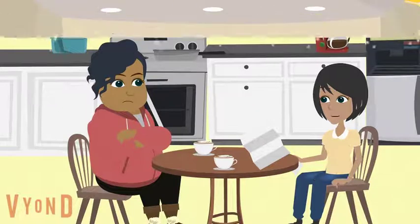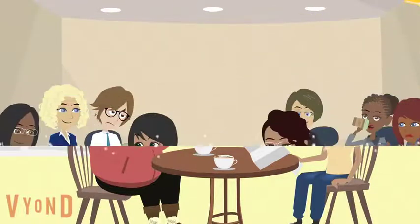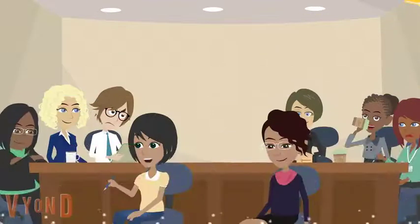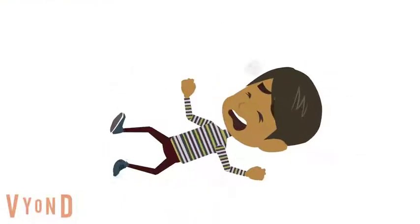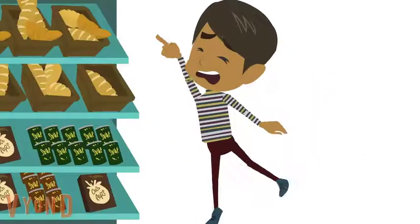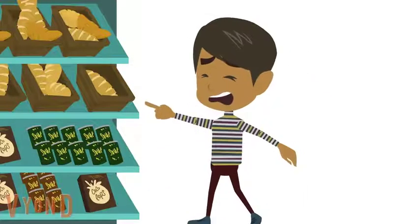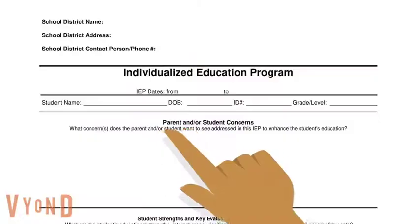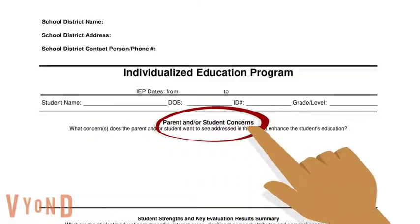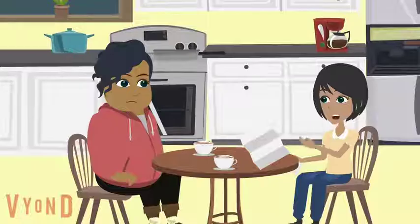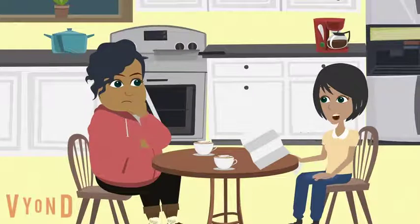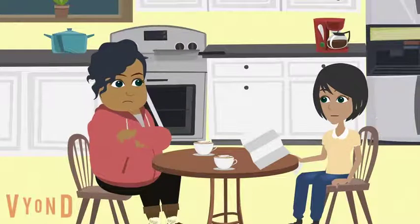Also, at the meeting I talked about how I was worried that Abel has tantrums and he doesn't use words to ask for what he needs. The IEP has a place to write parent concerns, but the school didn't put my concerns in that place in the IEP. I don't think I should sign this.